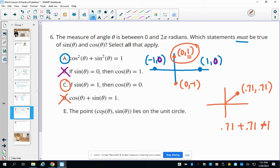And the point cosine of theta comma sine of theta lies on the unit circle. That is true. The x is the cosine and the y is the sine. So sine of theta, cosine of theta, or sorry, cosine theta, sine theta will be on the unit circle.